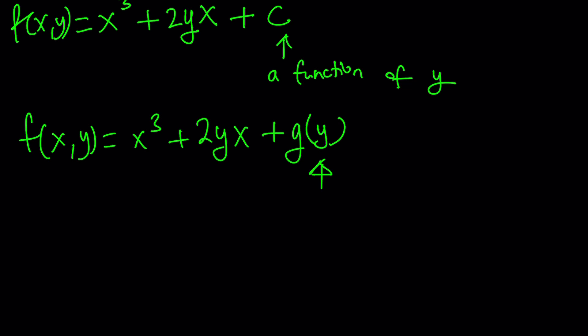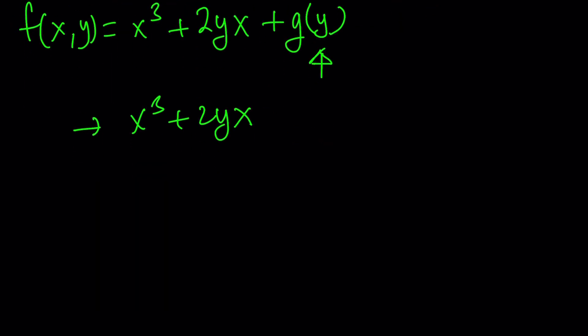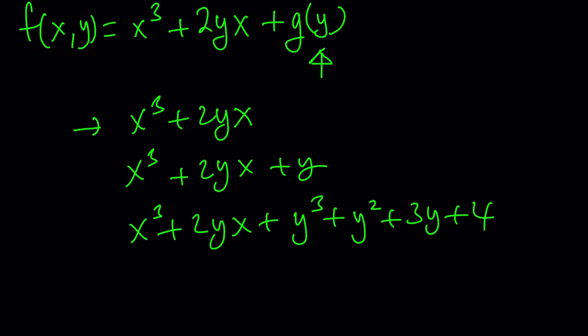g(y), what is that supposed to mean? It could be anything. So in other words, if the second equation wasn't given, x³ + 2yx without adding anything else - because zero is a function of y, right? The zero function would be a solution. Or you could add y to this. Or if you want, you could add y² to this. Even you could add something like y³ + y² + 3y + 4. Totally random.